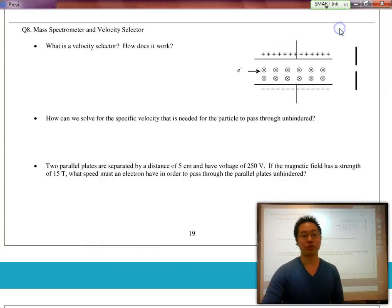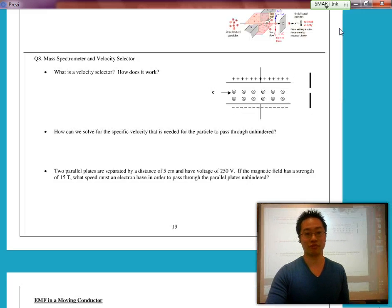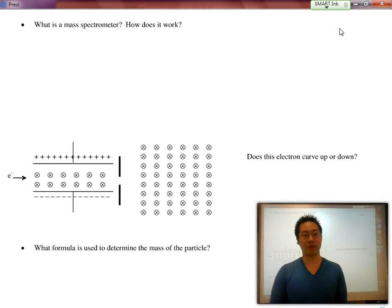If scientists were to adjust the potential difference, adjust the plates, it would change the value of the velocity. So therefore, scientists can fine tune exactly what speed they want as it passes through. Now, mass spectrometer is the second part.